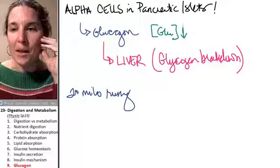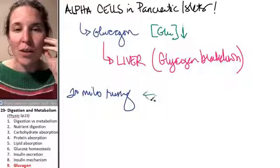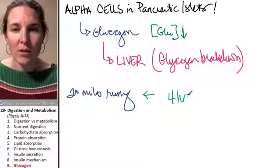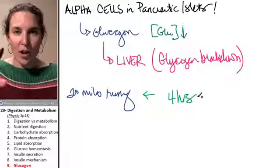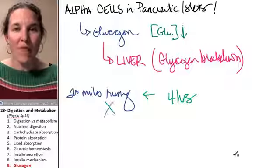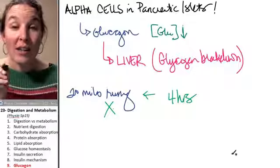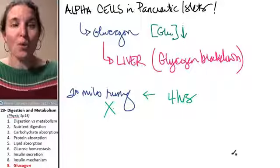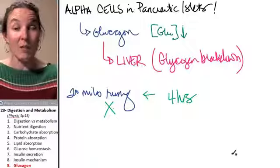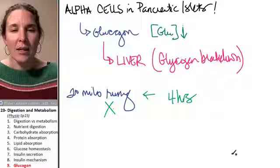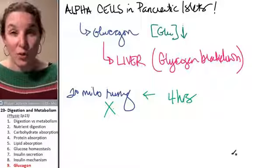Now, if you secrete glucagon for four hours, just dump glucagon chronically into your blood for four hours, you will deplete all of that. All the glycogen stores will be broken apart and dumped into the blood in the form of glucose after just four hours. The point is that it's extremely potent.